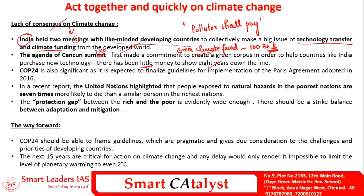COP24, ongoing in Katowice, Poland, is significant to finalize the guidelines for implementation of the Paris Agreement signed in 2015 and adopted in 2016. Researchers say developing countries will be the main victims of climate change rather than developed countries, and the poorest — particularly middle African and tropical Asian countries — will become even poorer, widening inequality between developed and developing nations. To bridge this protection gap between the rich and the poor, there should be a strike balance between adaptation and mitigation projects.